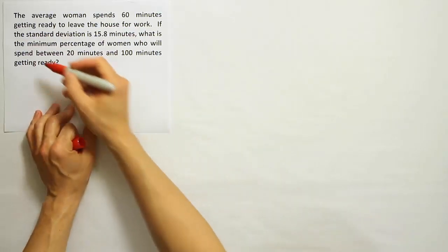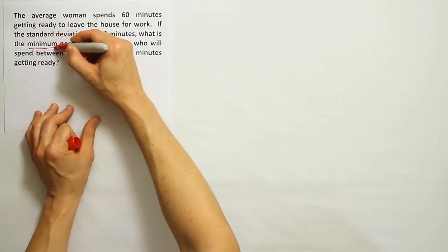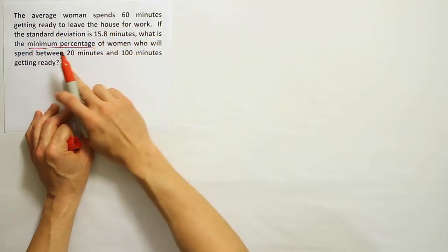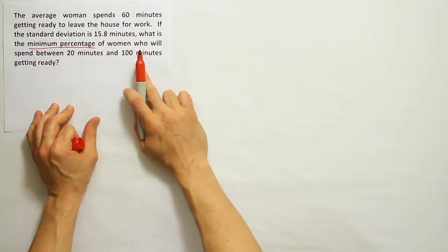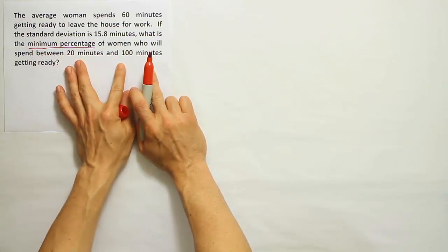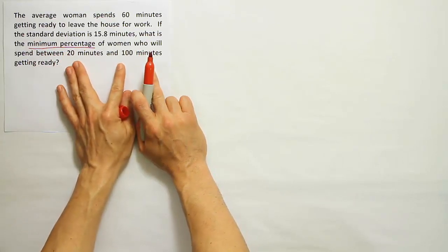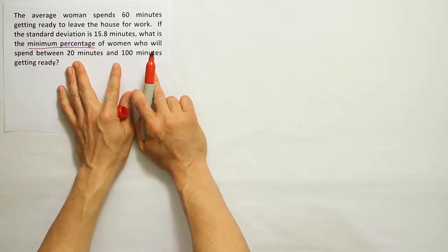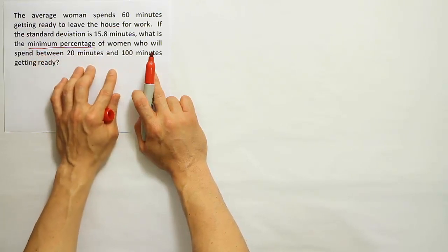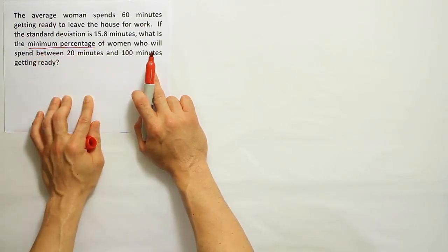All right, so again, look for the keywords when you read a problem like this. I see minimum percentage here. That indicates we're looking for the smallest percent that would be located within here. And that's usually a key phrase for Chebyshev's theorem. They also tell us the mean and standard deviation.